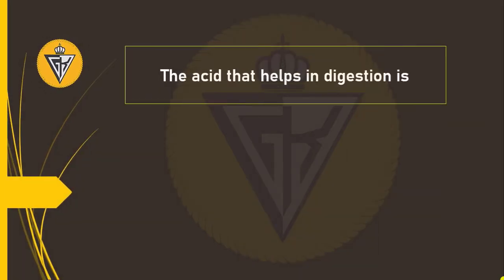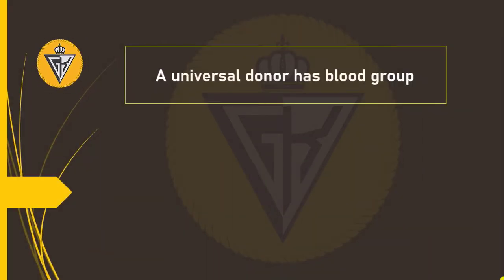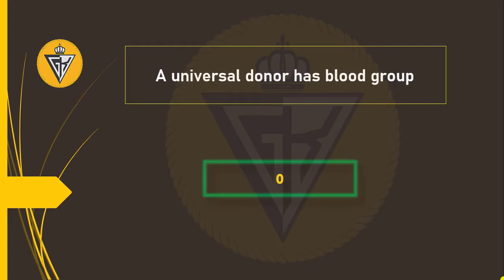The acid that helps in digestion is acetic acid. A universal donor has blood group O.